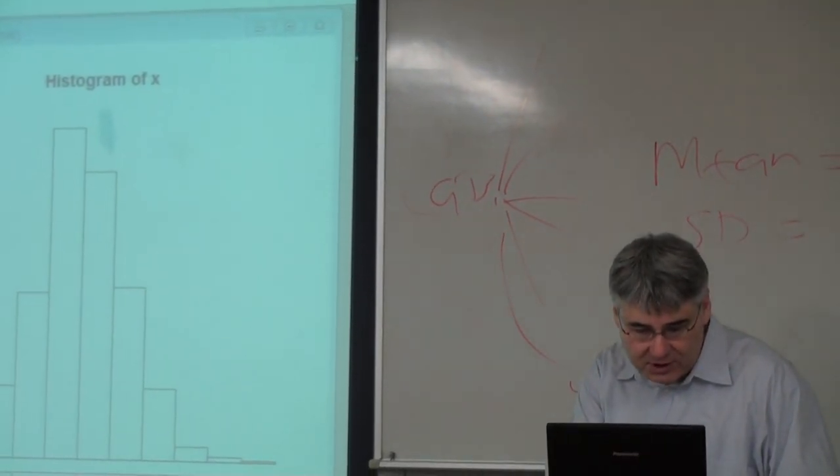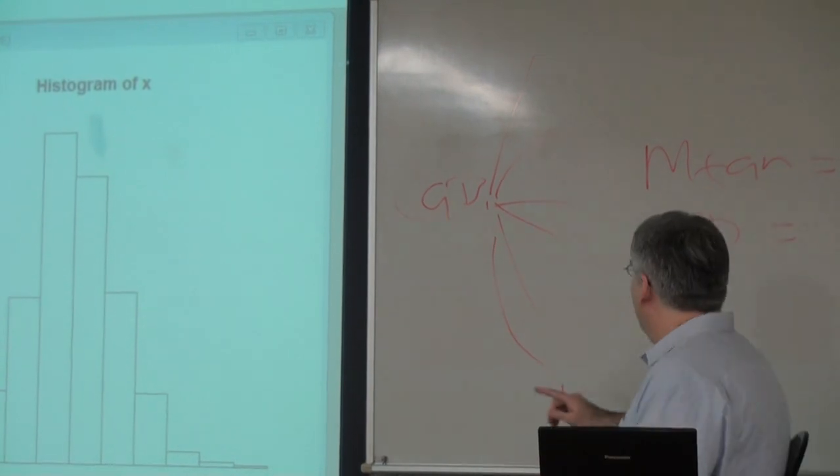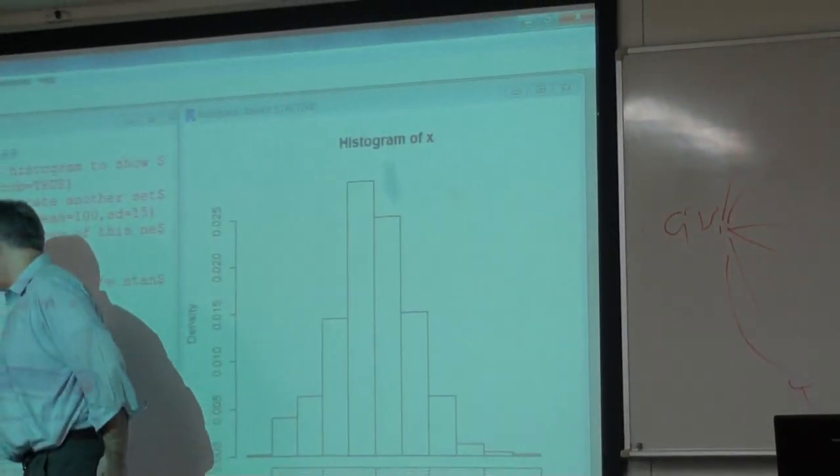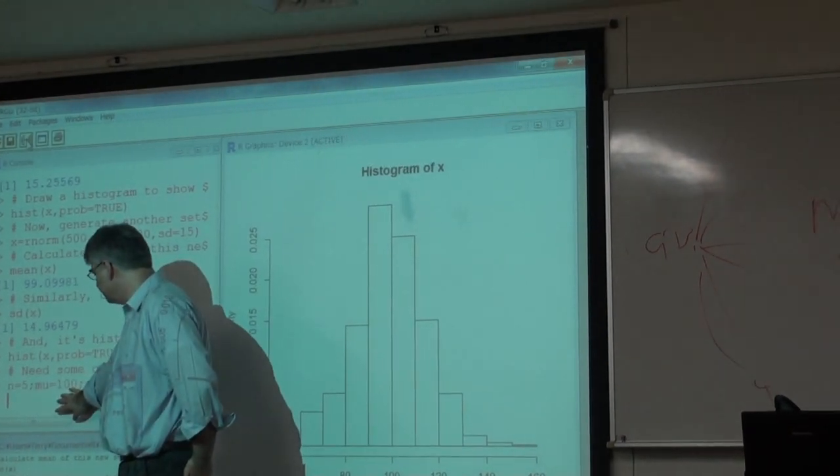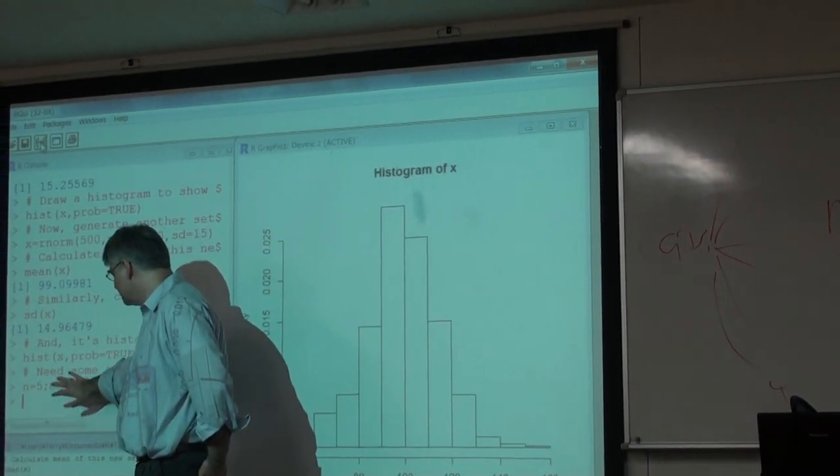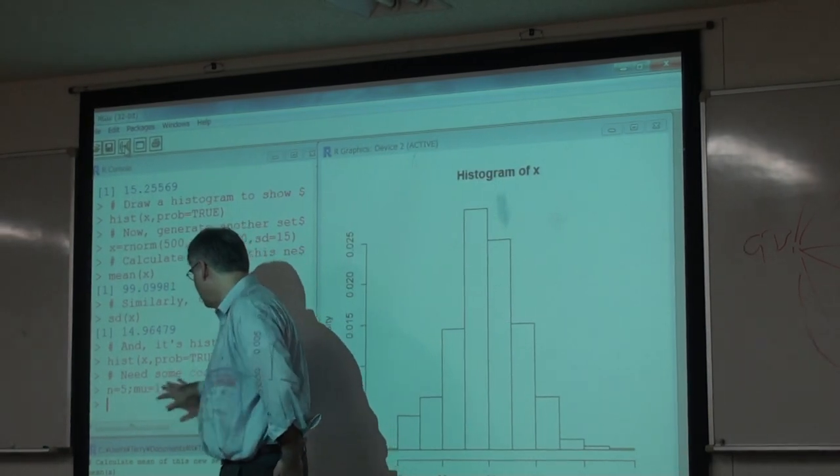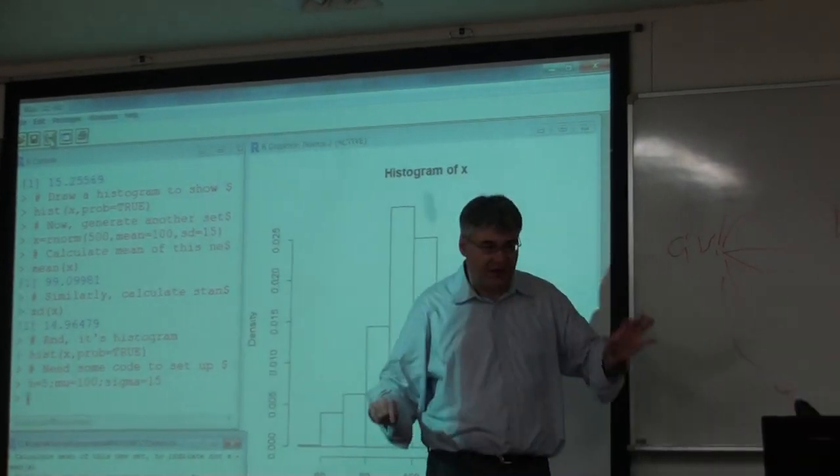I'm setting it to say okay, I'm going to take samples of five. All I need to do is change that number of times. Mu now being for the distribution of these samples 100 and sigma 15, so it's the same characteristics.